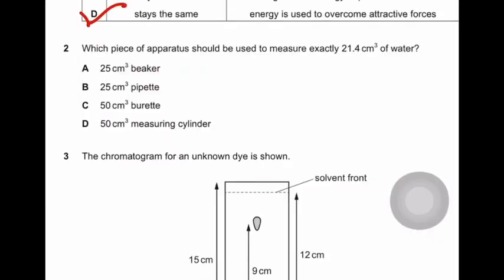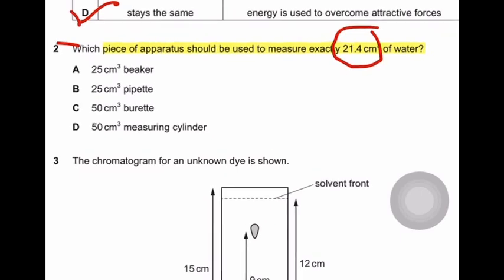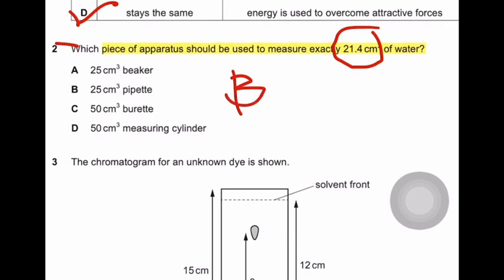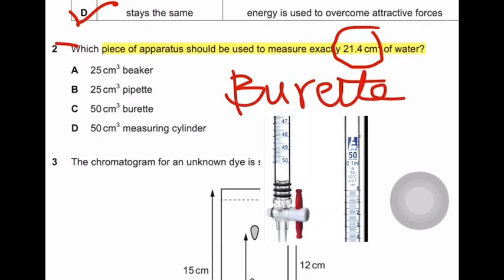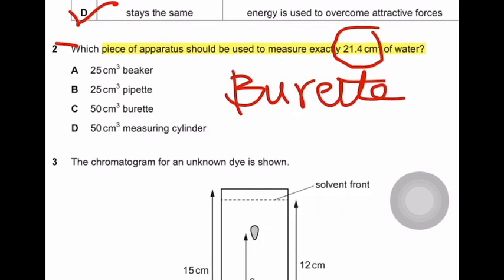Question number 2: Which piece of apparatus should be used to measure exactly 21.4 cubic centimeters of water? Here the measurement is up to one decimal point and to measure something up to one decimal point, burette is used and burette measures with more accuracy. So correct answer is C, 50 cubic centimeters burette.